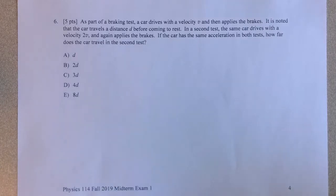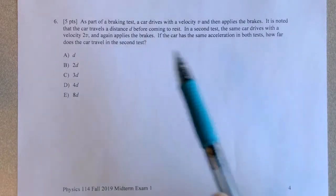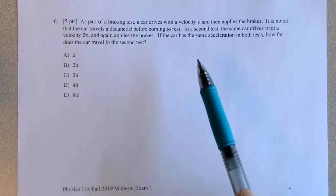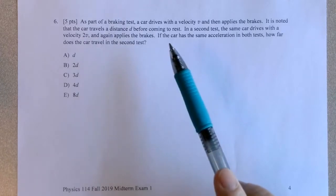You have a braking test which a car drives with a velocity of V and then applies the brakes. It travels the distance D as it's braking. In the second test, the same car drives with a velocity of 2V and then applies the brakes.